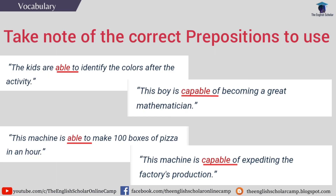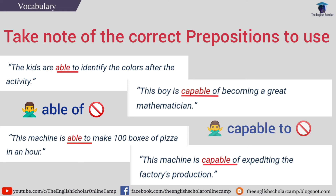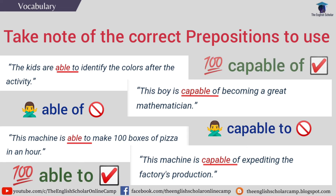Notice our example sentences. We consistently used able to and capable of. That is how we use them — we cannot say able of nor capable to. Just able to and capable of.